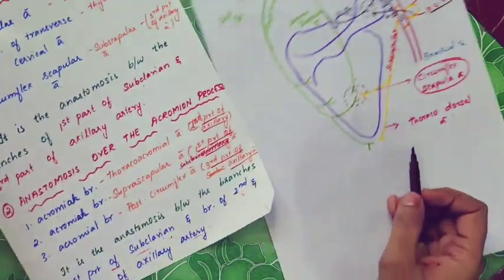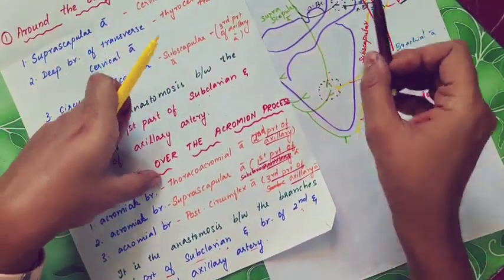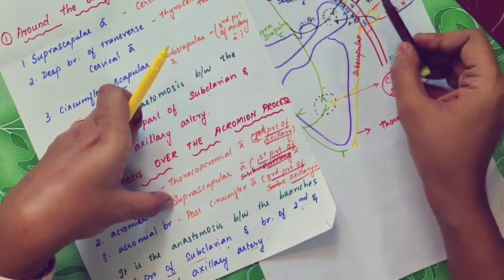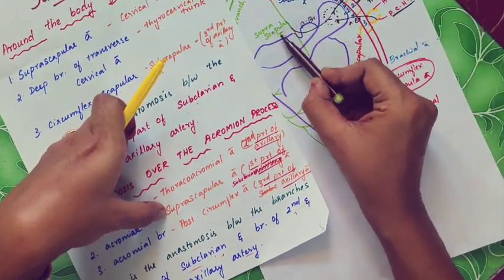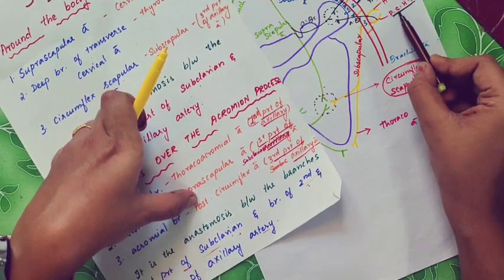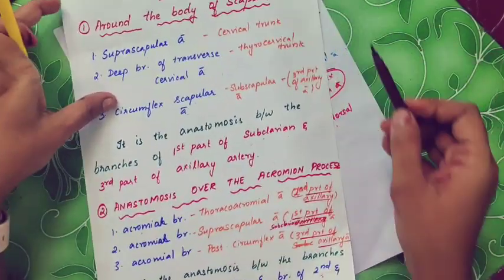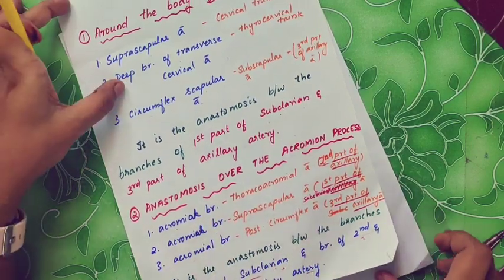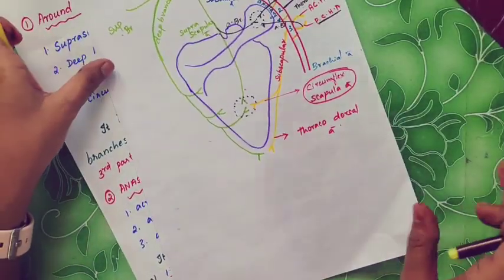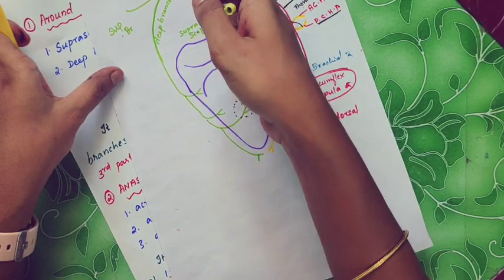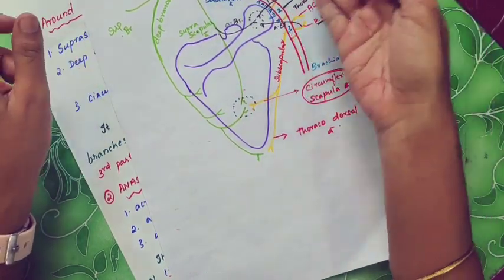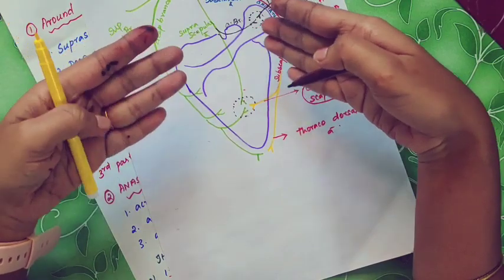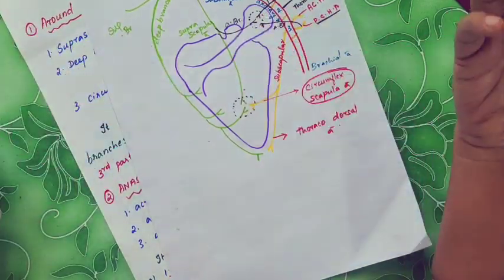Three acromial branches contribute: first, from the thoracoacromial artery; second, from the suprascapular artery; and third, from the posterior circumflex humeral artery. In clinical anatomy, if there is any blockage in the axillary artery or subclavian artery, there will not be any necrosis during injury of the scapula, because of this anastomosis.